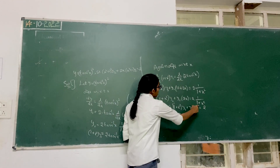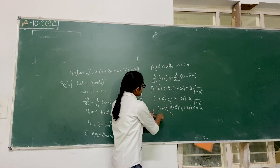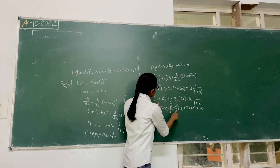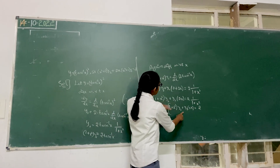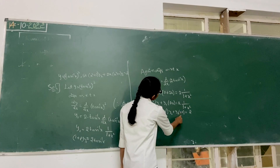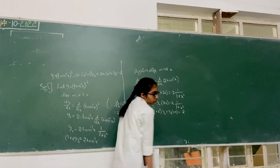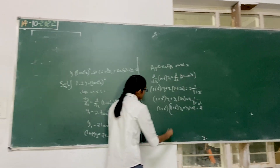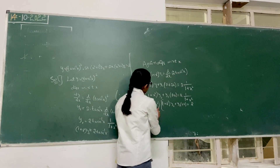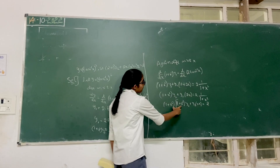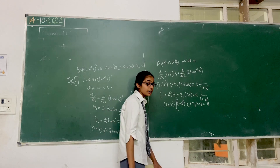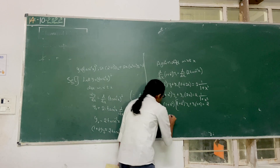1 plus x squared. The expression involves 1 plus x squared terms, leading to 1 plus x squared full square in the final result.